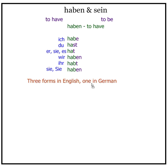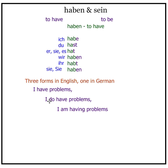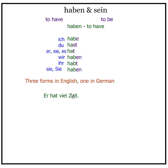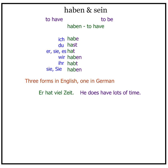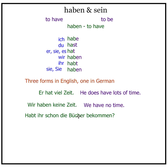Remember, three forms in English, one in German. So: 'I have problems / I do have problems / I am having problems' — three forms in English — is simply ich habe Probleme in German. Er hat viel Zeit — he does have lots of time. Wir haben keine Zeit — we have no time. Habt ihr schon die Bücher bekommen? — Did you already get the books?